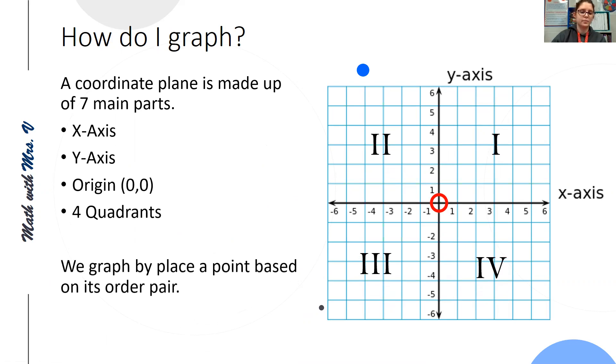We graph by placing a point based on its ordered pair. For example, 2 comma 1. So we're going to graph this based on the ordered pair and we graph in alphabetical order. So we move along the x-axis first and then the y-axis. So on the x-axis, we would count 2 from the origin towards the positive direction and then up 1 along the positive y-direction. And this would be our point 2 comma 1.